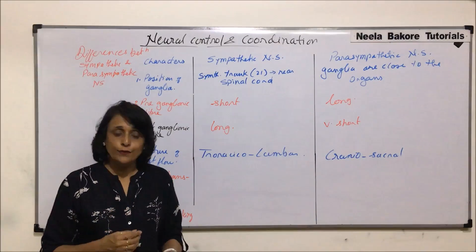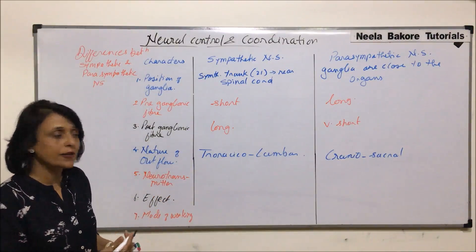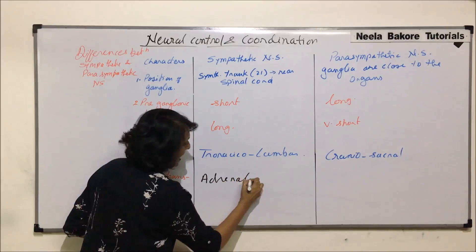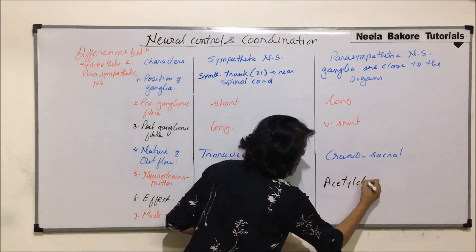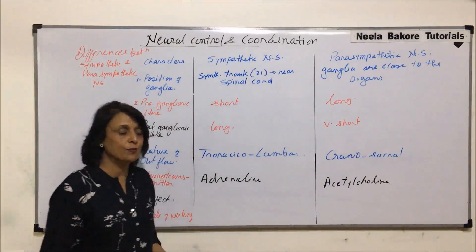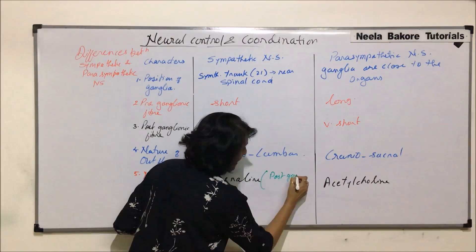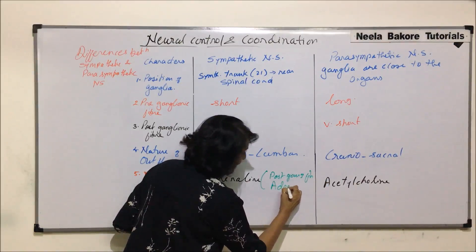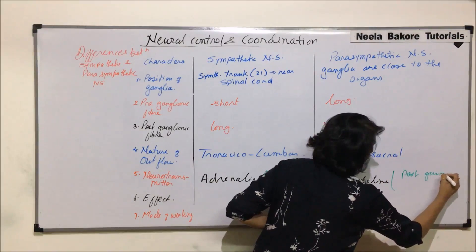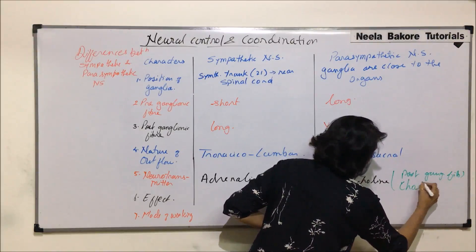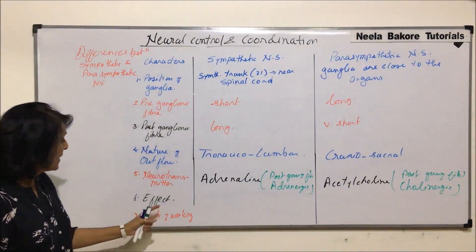Now, regarding neurotransmitters: in the sympathetic nervous system, the post-ganglionic fibers have adrenaline as the neurotransmitter, and that is why these nerves are called adrenergic. In the parasympathetic nervous system, the neurotransmitter is acetylcholine, and the post-ganglionic fibers are called cholinergic. These names are given on the basis of the neurotransmitters they use.